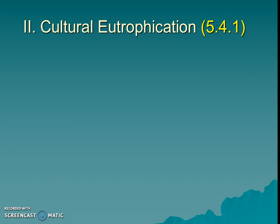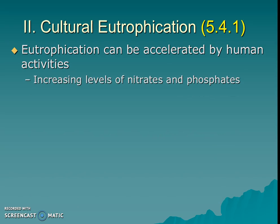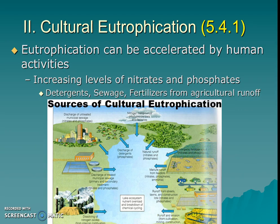Unfortunately, this natural eutrophication process is sped up by cultural eutrophication. We accelerate the nutrients that end up in the lake, stream, or even Chesapeake Bay, by adding nitrates and phosphates in many different ways — from detergents, accidental discharge of sewage, and especially fertilizers from big agricultural runoff.